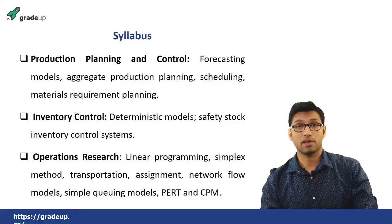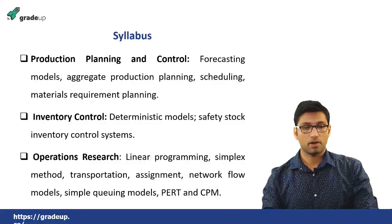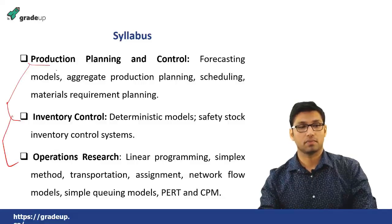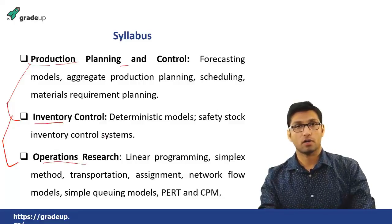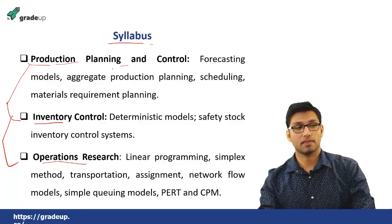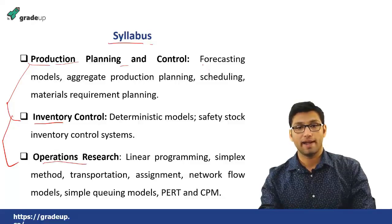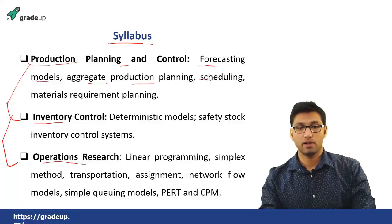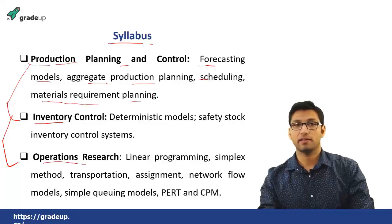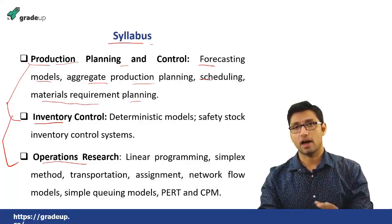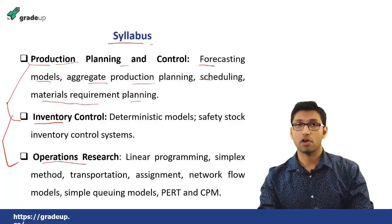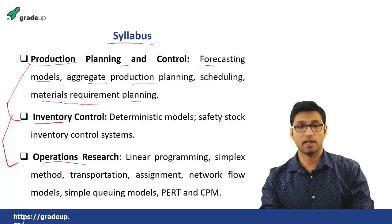Now talking about the syllabus of industrial engineering for the GATE exam, this syllabus has been divided into three broad categories: production planning and control, inventory control, and operations research. In production planning and control, the subtopics are forecasting models, aggregate production planning, scheduling, and material requirement planning. You will be studying the methods and methodology required for effective production planning and controlling the production process in an industry.